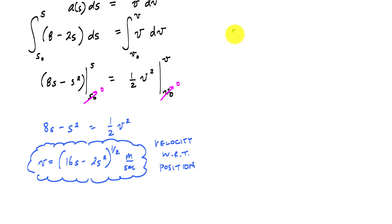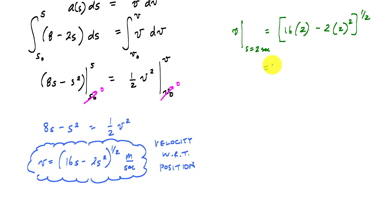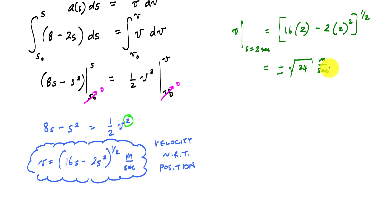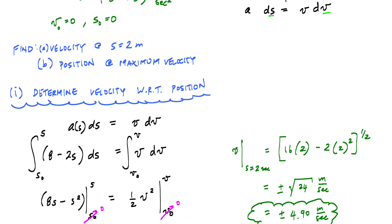For the velocity at s equals 2 meters, we just plug and chug. Because of the squared term in the expression, the answer has two roots: plus or minus the square root of 24 meters per second, which converts to plus or minus 4.90 meters per second. So we now have velocity as a function of position.